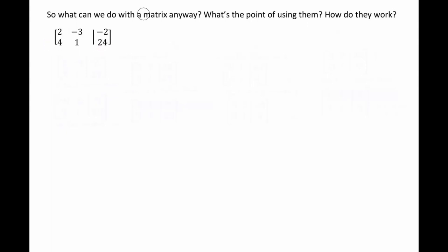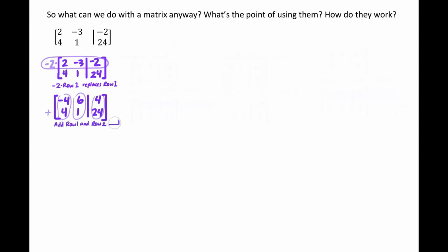Now think about what we did with the elimination process. We multiplied some of those equations up. So guess what we can do in a matrix? We can multiply its rows up. So if you take the top row and multiply by, let's say negative two, what we're going to notice is that it becomes negative four and then positive six and then positive four. You multiply every single piece of that row. And then we can go ahead and we can take the two rows and add them together. Just like how when we did elimination, we could add equations together.